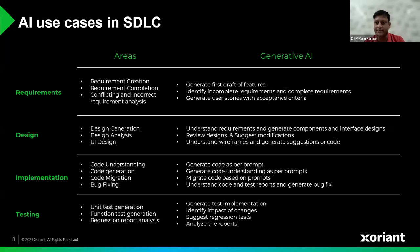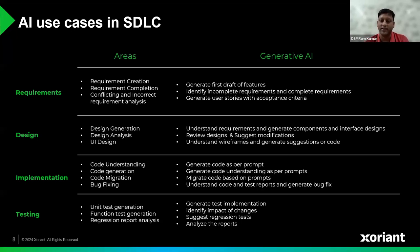Looking at this, one might say AI can be used across the board and can really help in speeding things up. But what's really stopping the adoption of AI to its fullest? What are the challenges that people typically face when they want to adopt AI in their app development lifecycle?